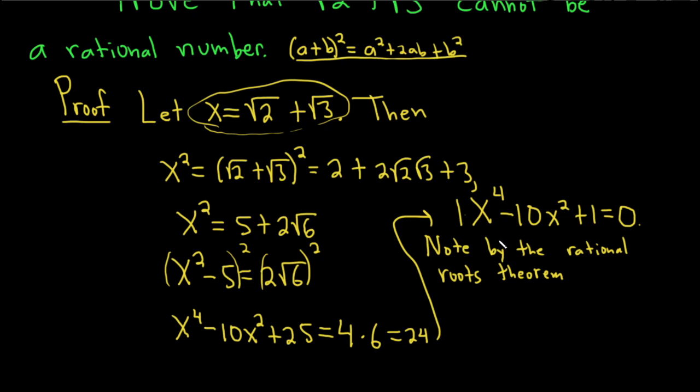So in this case, that would mean that the possible rational roots are, well, the factors of 1 are plus or minus 1. And then you divide those by the factors of this 1 over here, so plus or minus 1. So you just get plus or minus 1.